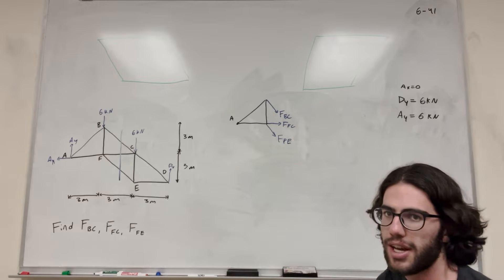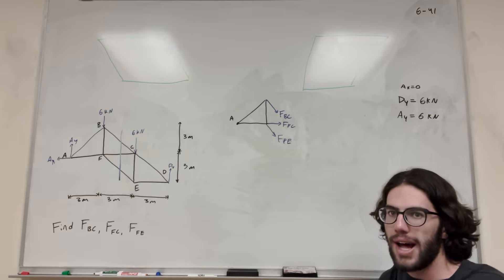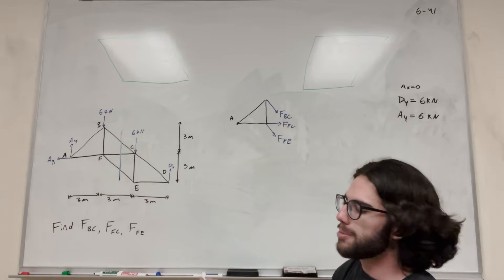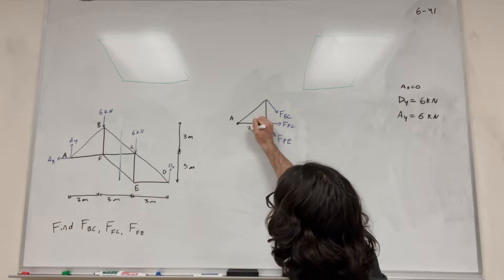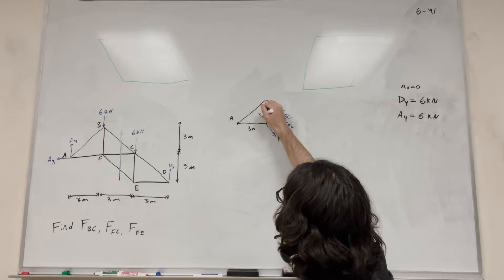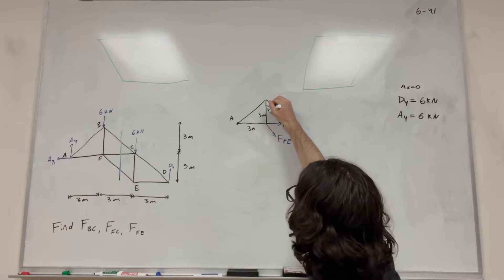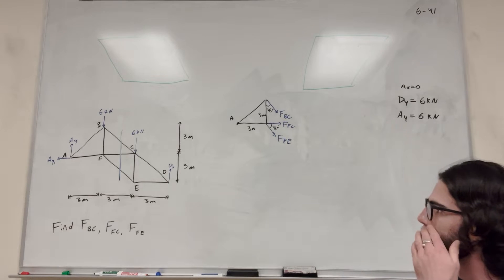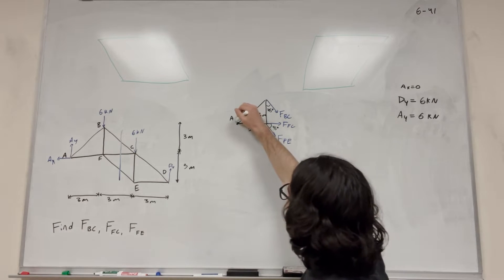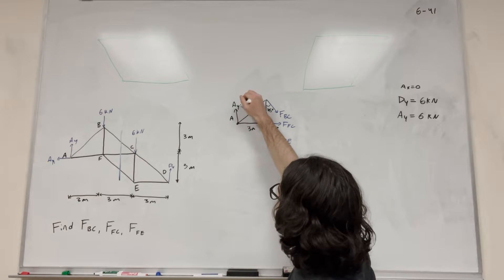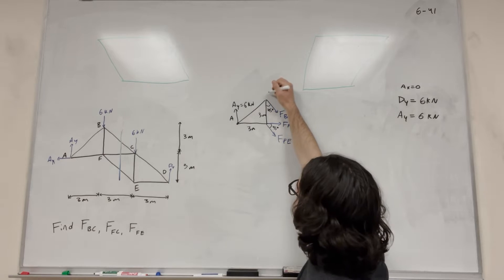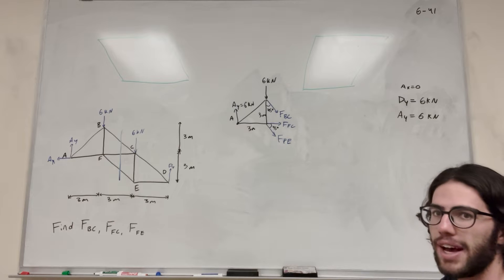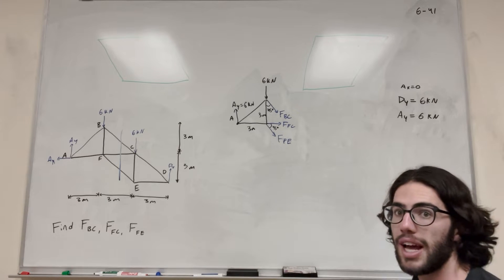I assumed that they were all in tension. The reason is it's going to make things a lot simpler when we do our math, and it's easy to find out later if they're in tension or compression. So there are no assumptions you have to commit to — you can just draw it and figure it out later. We also have A of Y equal to six kilonewtons and a six kilonewton load at the top.